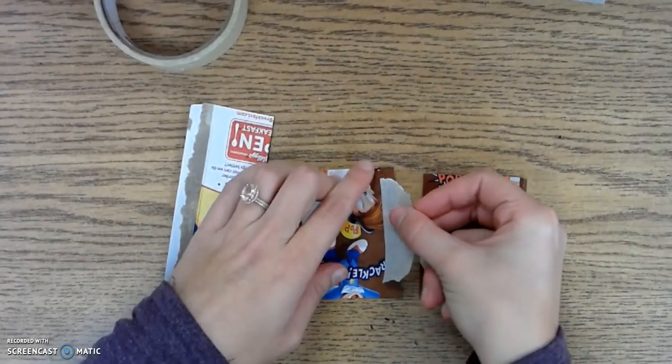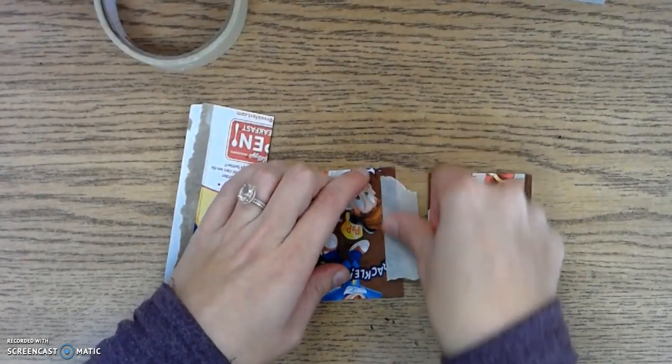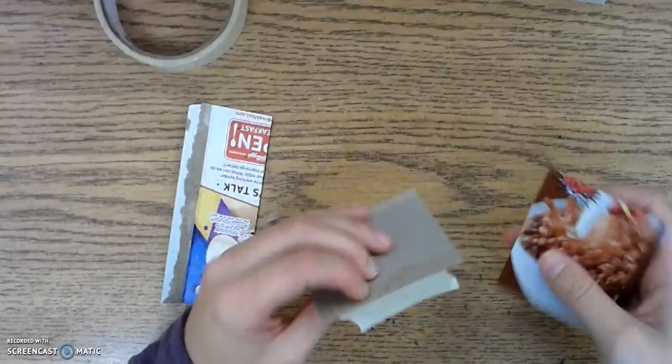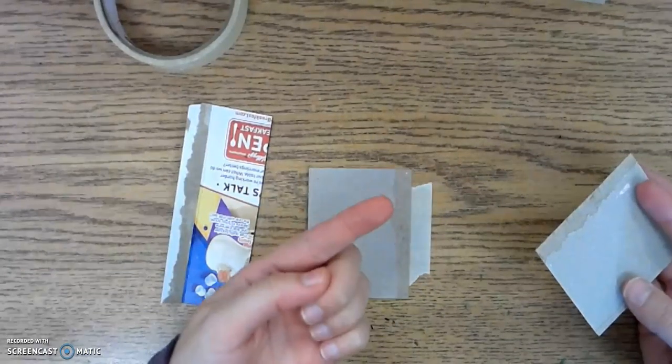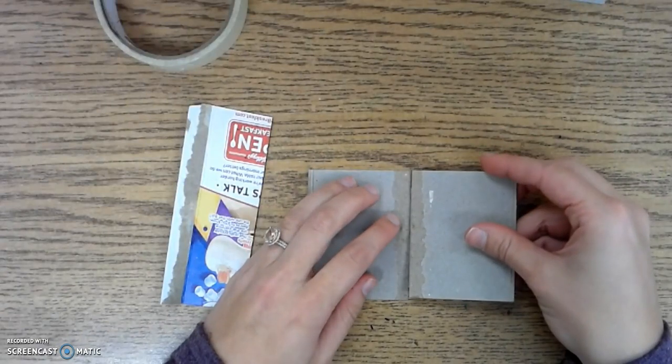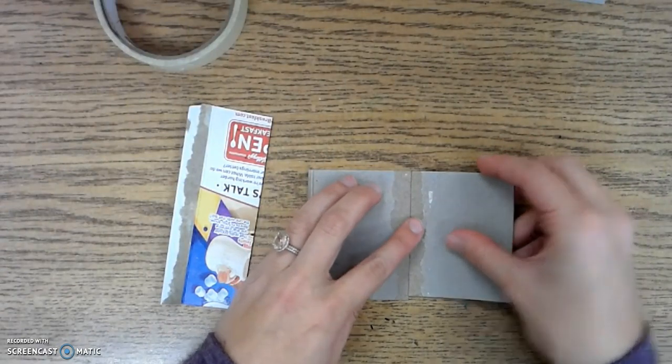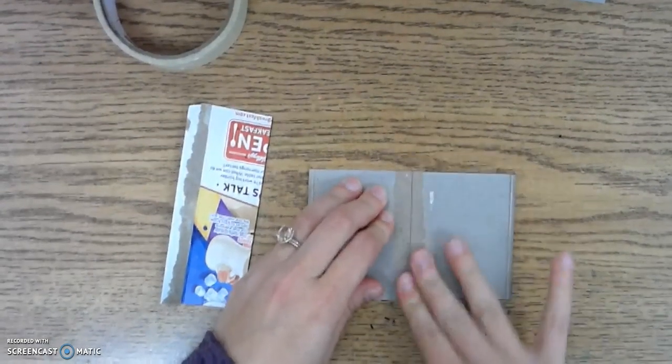I'm going to take my tape and stick it to one side, just like that. And I'm going to flip it over to where my sticky side is up. I'm going to take my other piece and line it up and stick it right down there.